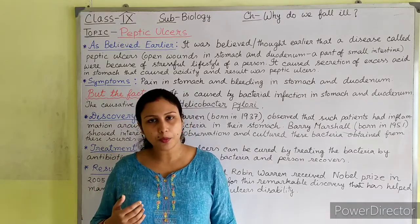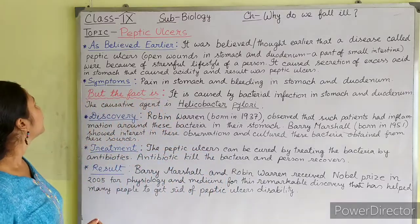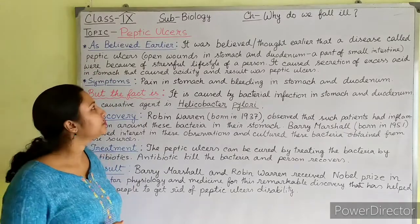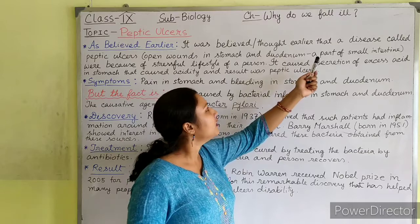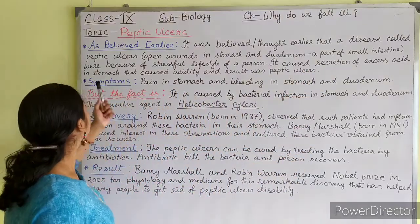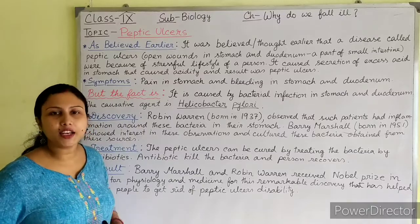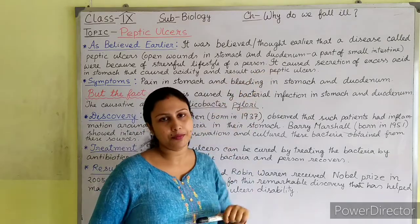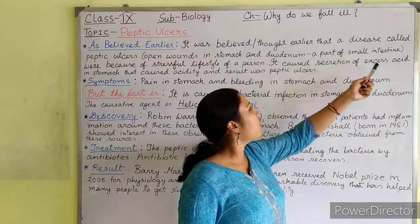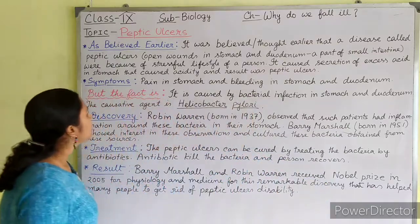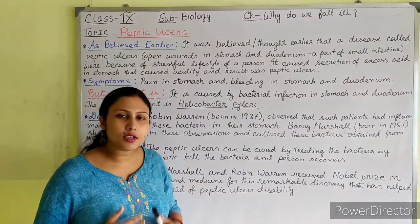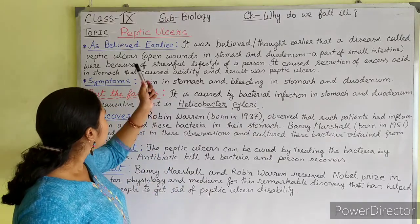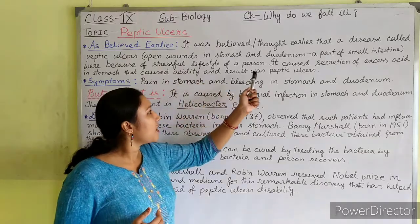So let us start the topic: Peptic ulcers. As believed earlier, it was thought that peptic ulcers is a disease which is a kind of open wounds in the stomach and duodenum. Duodenum is a part of the small intestine.